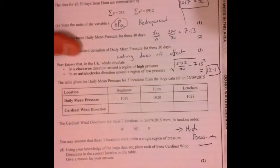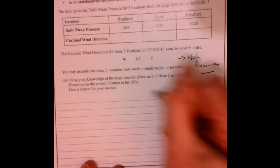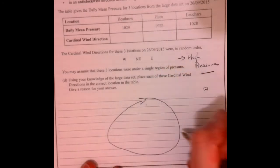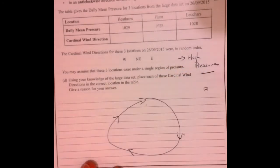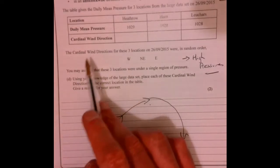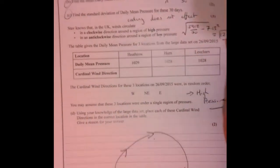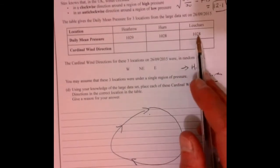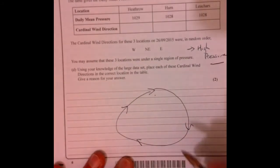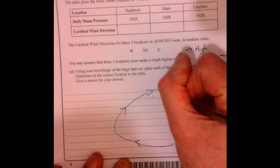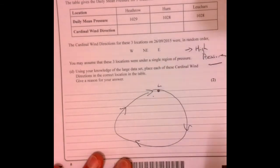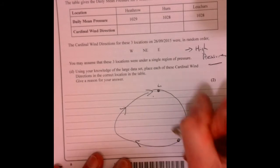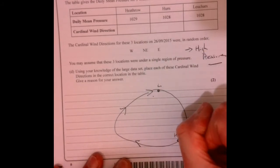Right, what does that mean? That means if you imagine around the UK, it says that it's going in a clockwise direction. This is what it tells us up here. So we obviously need to know where these places are. This place here, Luchars, that's up in Scotland, so that's right up north there. And then if you imagine Heathrow, Heathrow is down in London somewhere, just outside London.